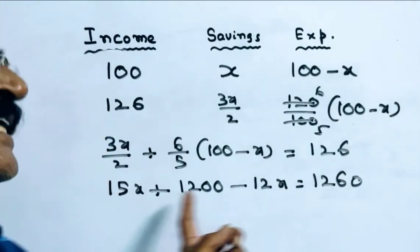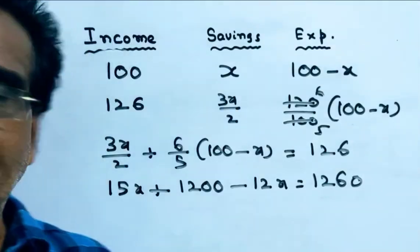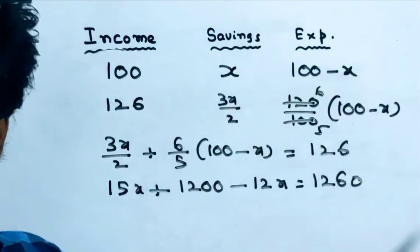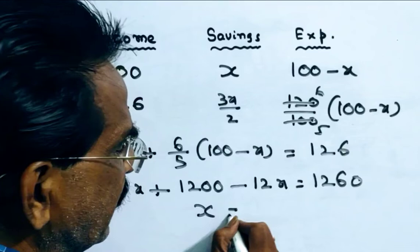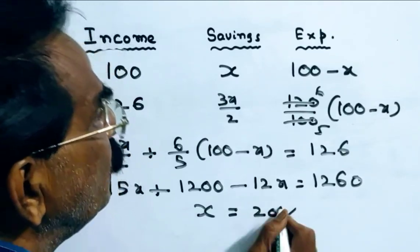Friends, 15X minus 12X is equal to 3X. 3X is equal to 60. X is equal to 20 percent. X is equal to 20 percent.